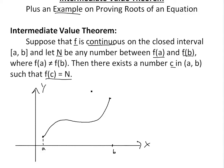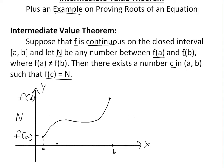Let n be any number between f(a) and f(b). This point is f(a) and this point is f(b). If n is in between, we just draw a straight horizontal line across at that n value. As you can see graphically, there exists a number c within (a, b) — somewhere right here — and f(c) is equal to n. That's what this theorem is illustrating.